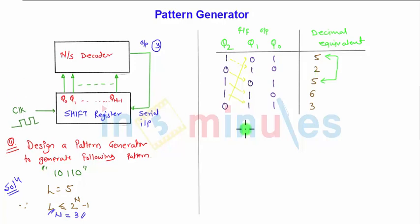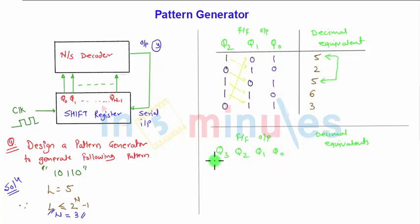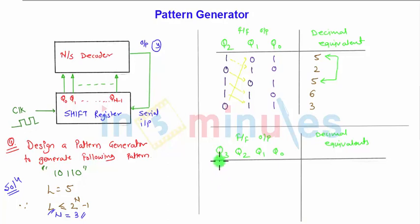The requirement changes to four flip-flops, so we have a new table with flip-flop outputs and their decimal equivalents. The flip-flop outputs are extended to include Q3, Q2, Q1, and Q0. Let us find out what the output will be.